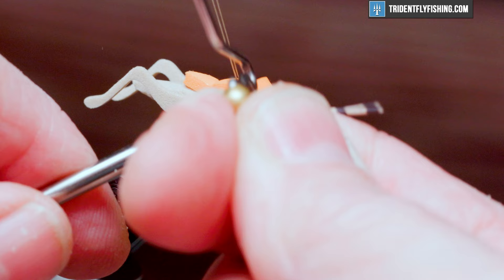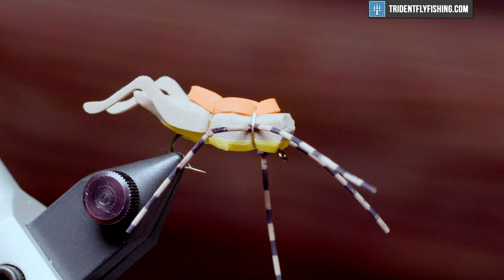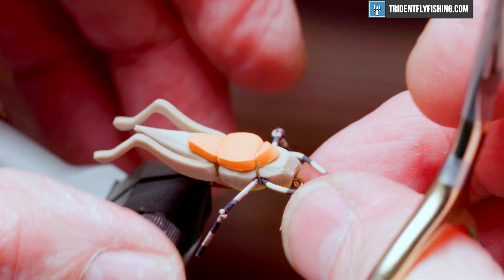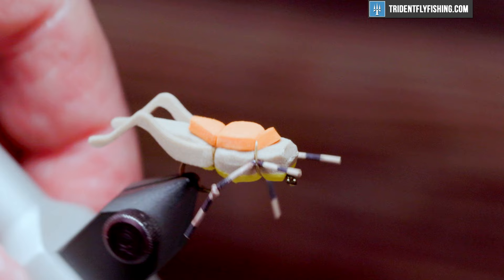Three turns ought to do it. It doesn't have to be too many. Cut our thread. And cut our legs to length. This is purely up to you. And the front legs on these tend to be kind of short. There.